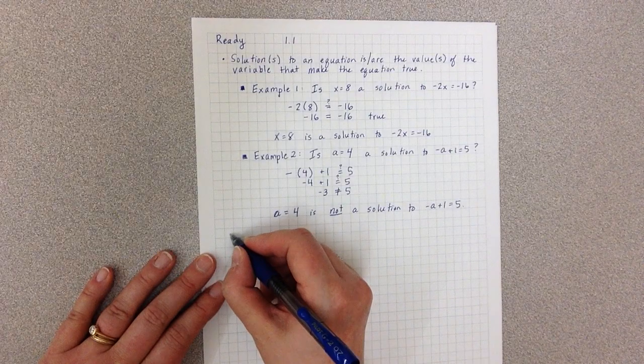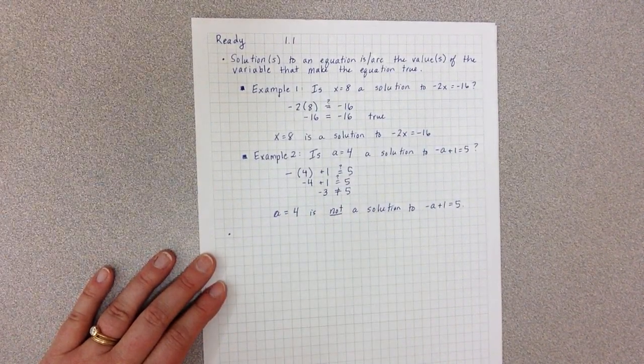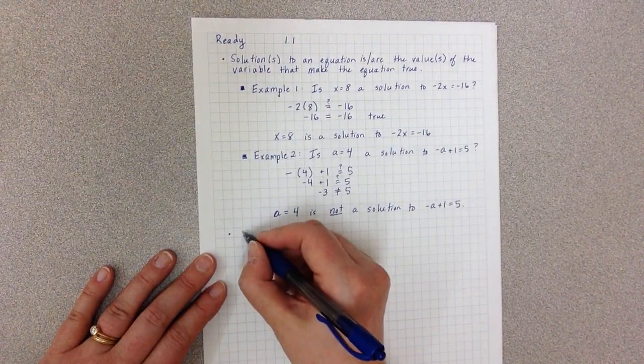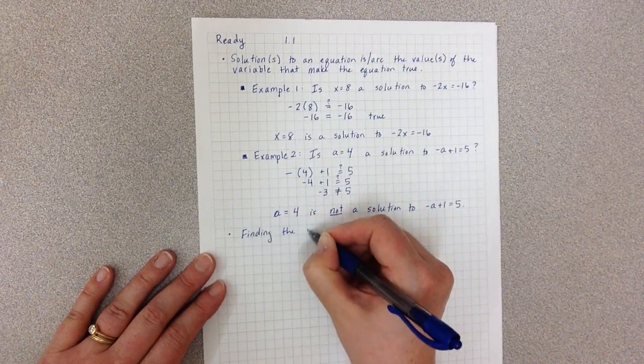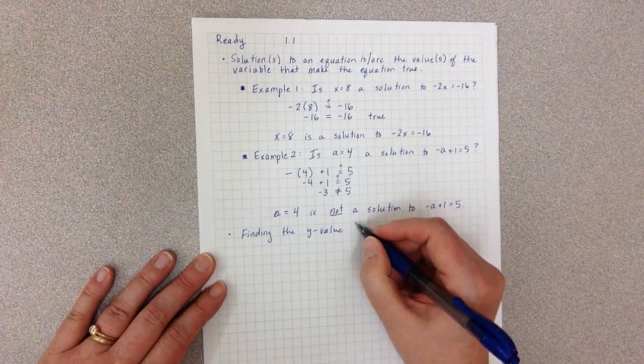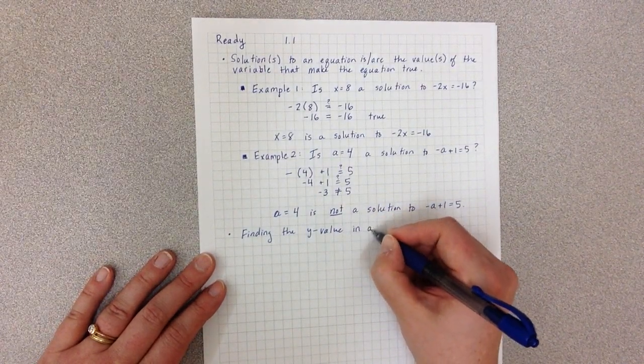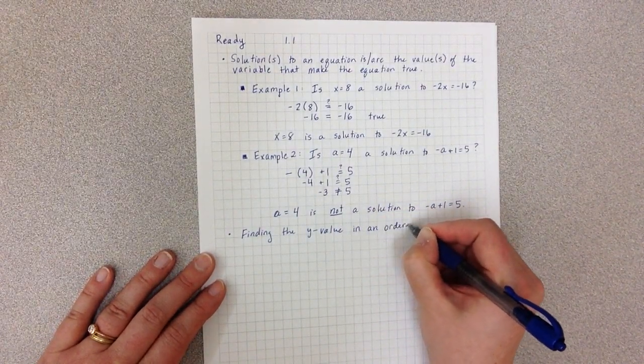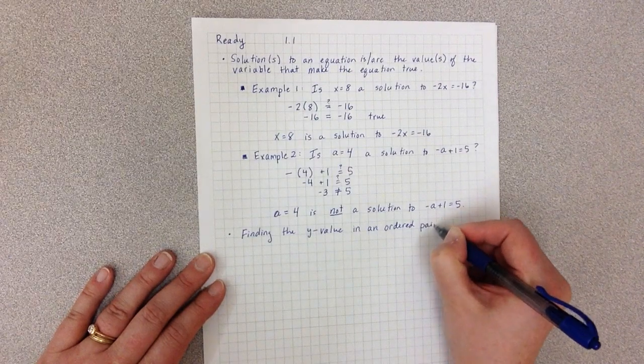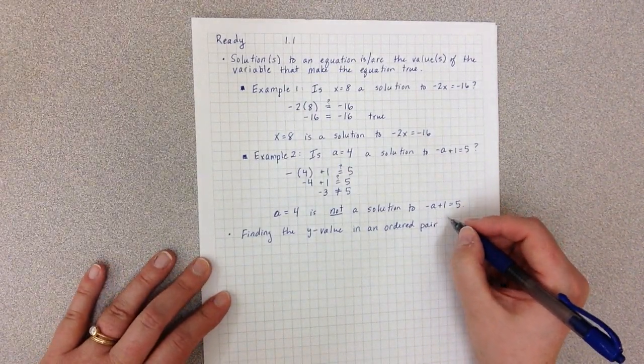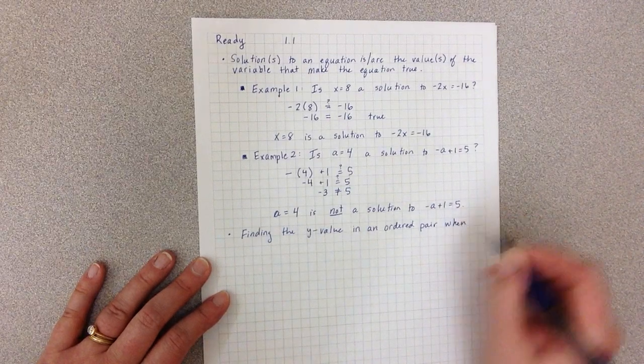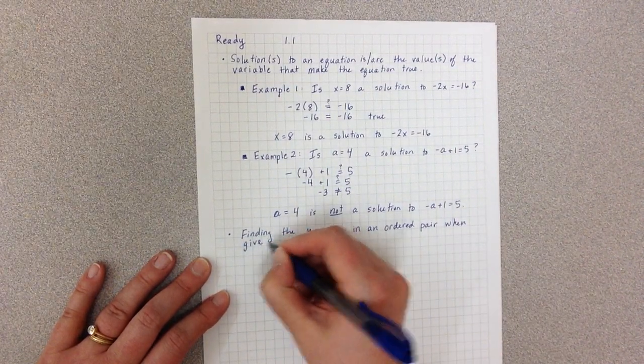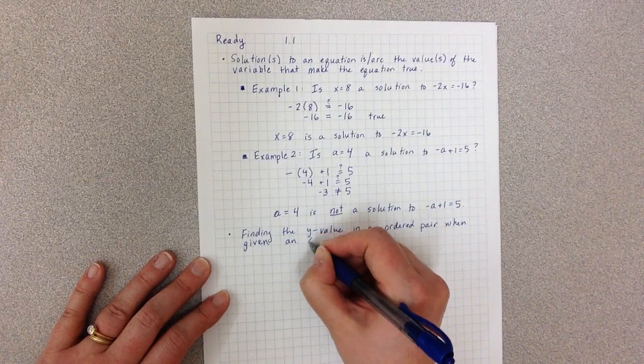The second part of this ready is asking you to find the y value. So finding the y value in an ordered pair when given an x value.